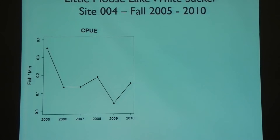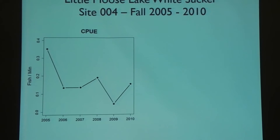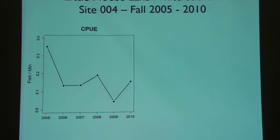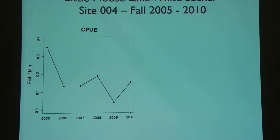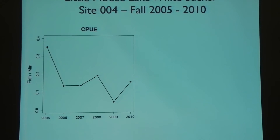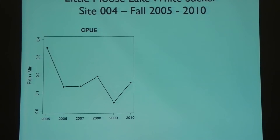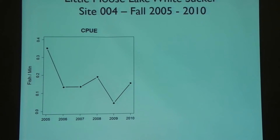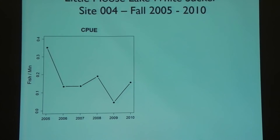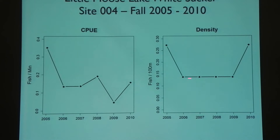This also affects single-species metrics. If you're computing CPUE for one species, that effort denominator is affected by all species. You could catch the same number of lake trout both years, but if in the second year you also caught 100 smallmouth bass, it takes much more time — and your lake trout CPUE drops even though you caught the same number. Looking at white suckers at a single site: effort-based CPUE shows a downward trend, a 50% drop — but fish per 100 meters shows nothing changed. Same number of fish.